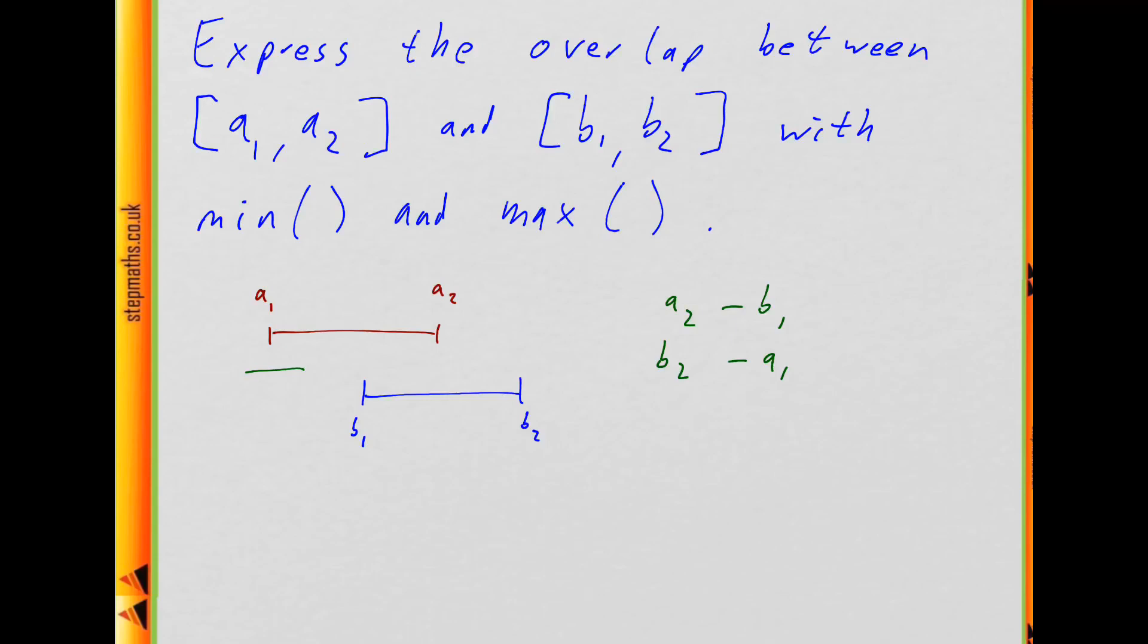Suppose instead b2 was here. Then what's the overlap? The overlap is going to be the whole of this interval, because this interval is just contained in this one. So in that case it would just be b2 minus b1 as the length of the overlap.